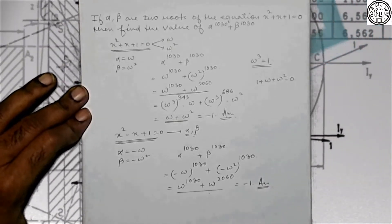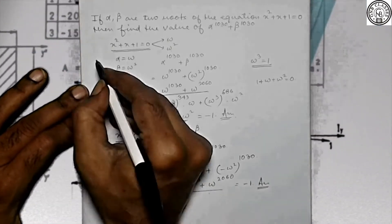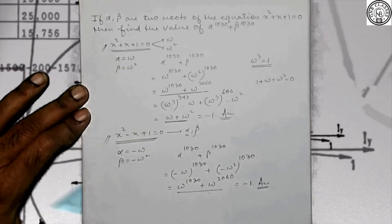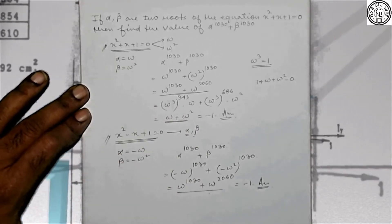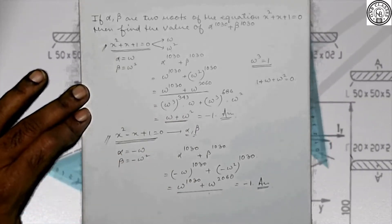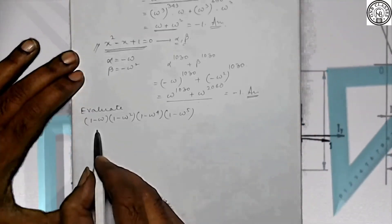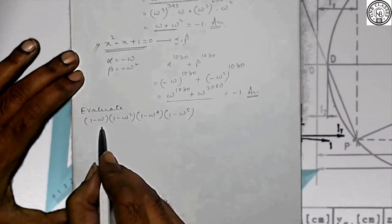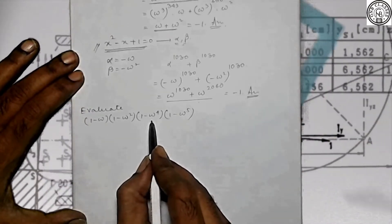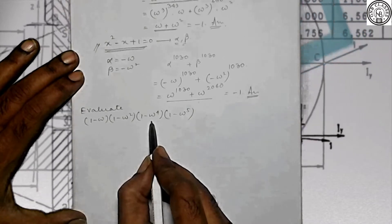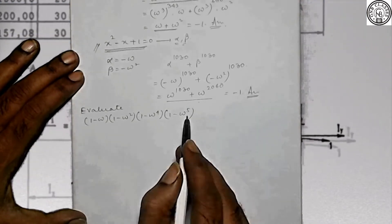Have you understood this problem? Please remember these two forms. Let me take another example: Evaluate (1 - omega)(1 - omega²)(1 - omega⁴)(1 - omega⁵).